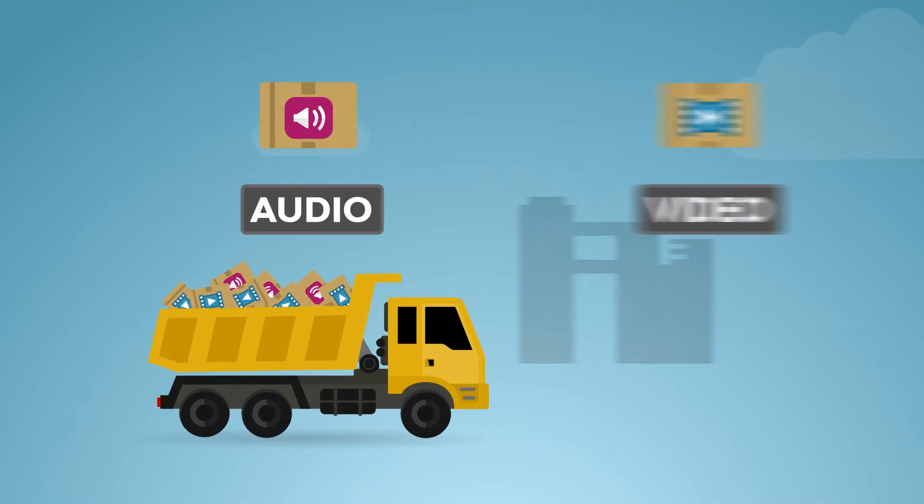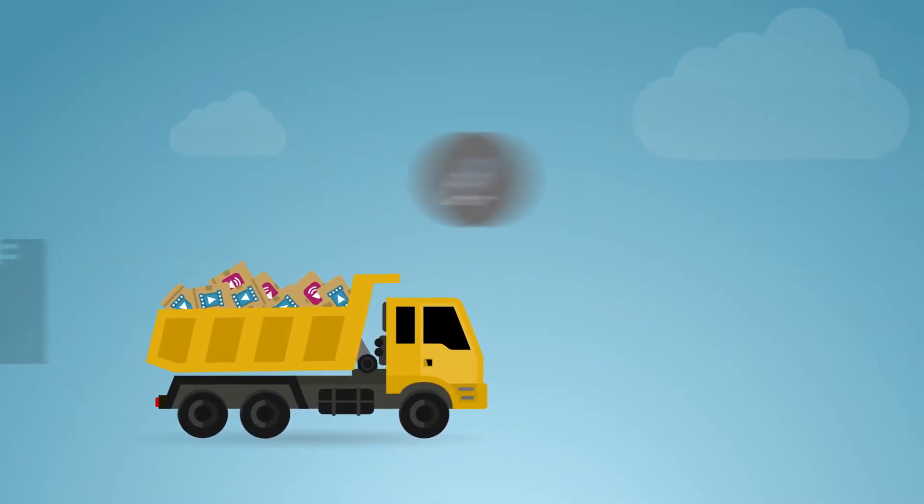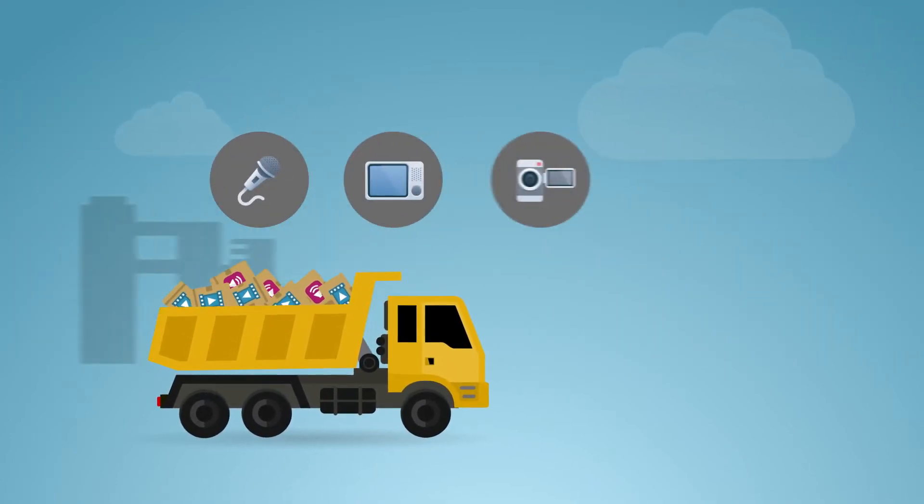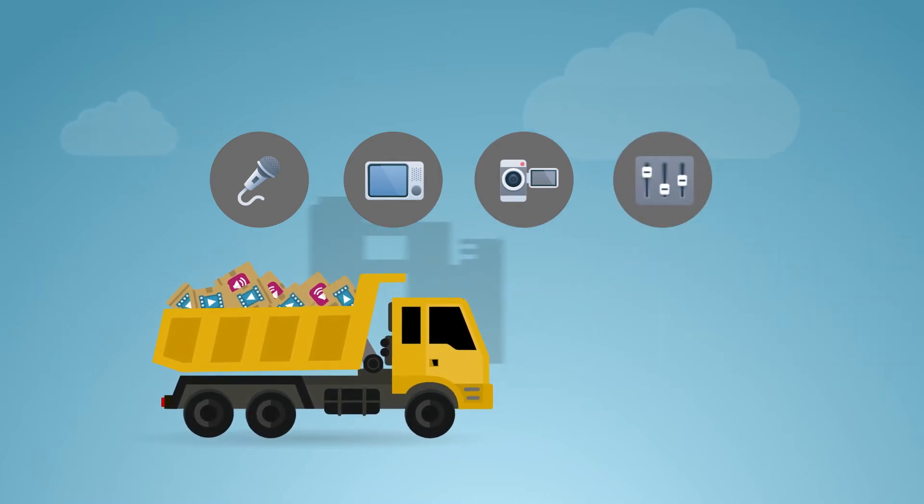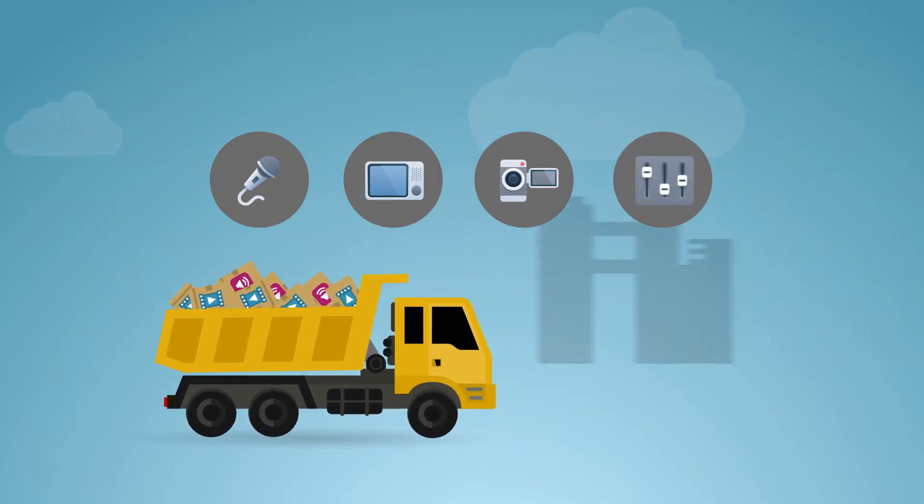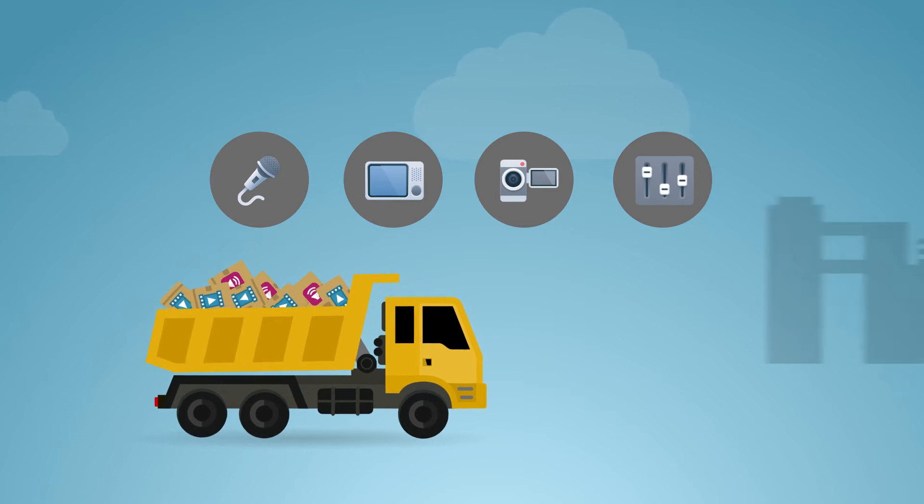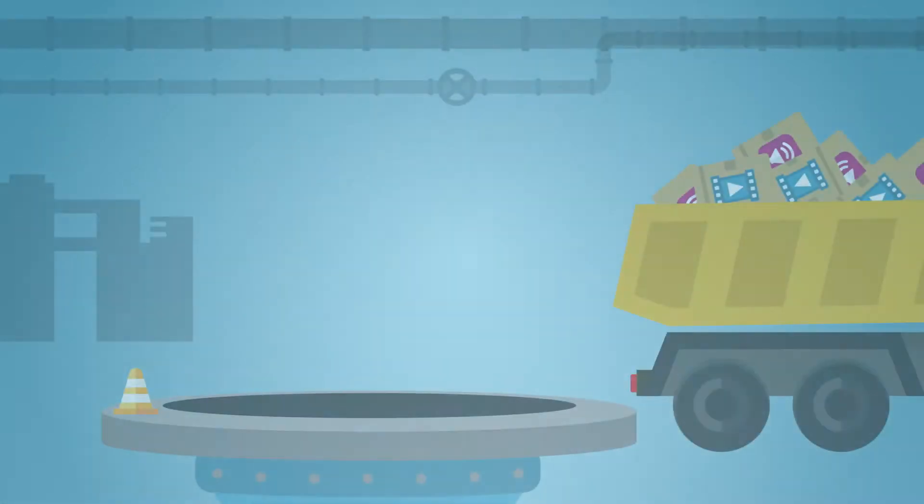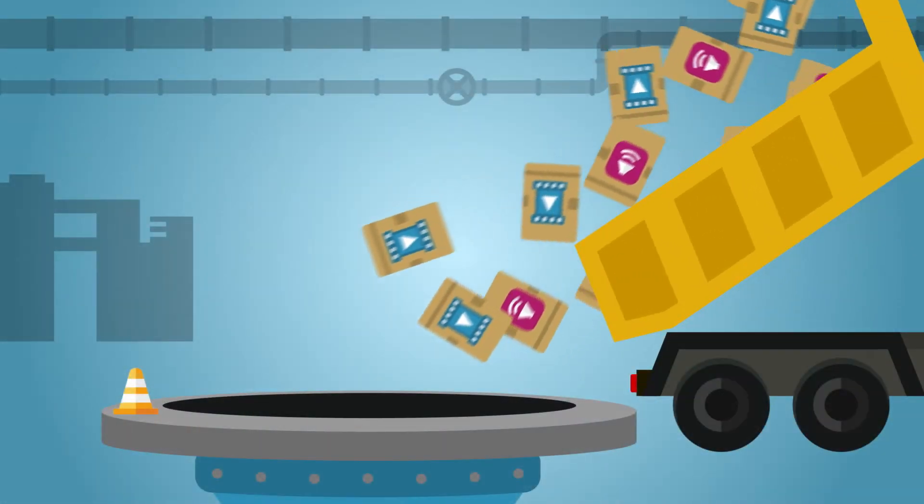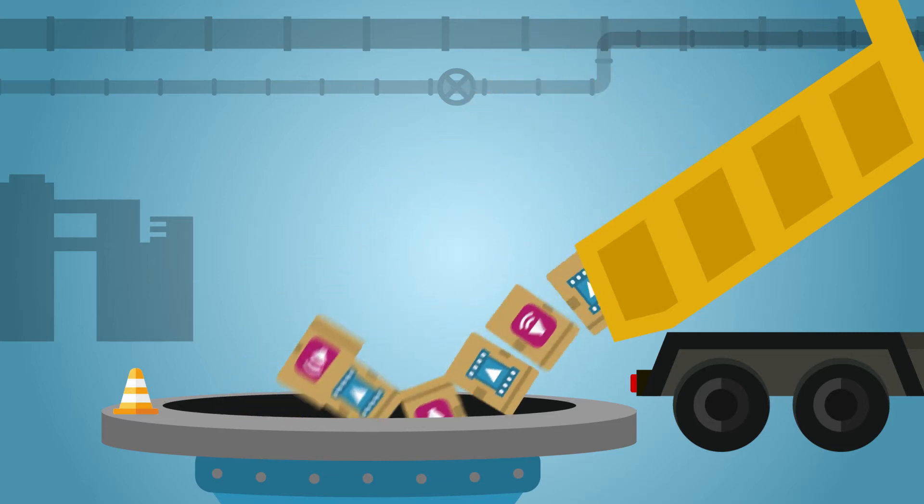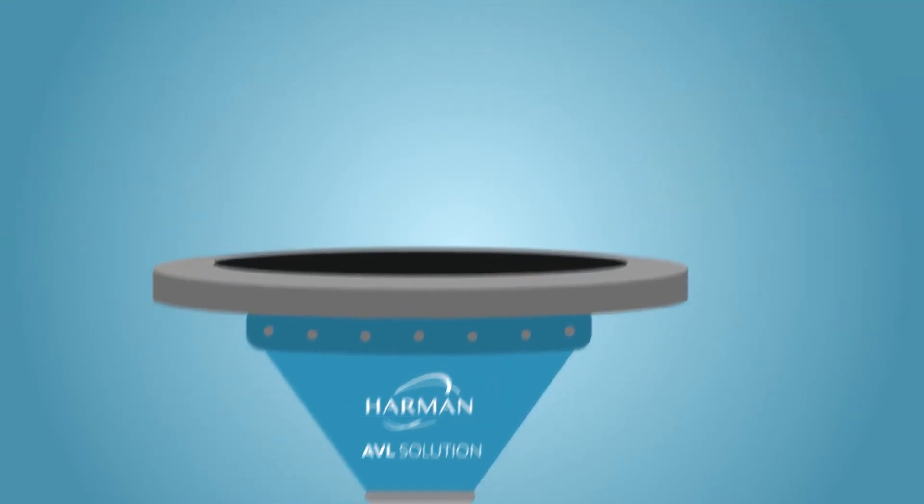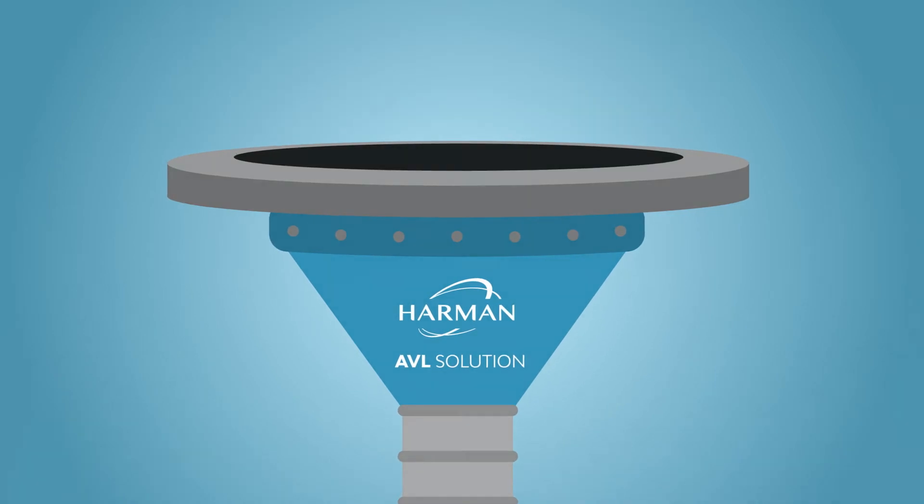We start with audio and video sources. Live audio is picked up by microphones, whereas audio and video from cameras, recordings, media servers, PCs, etc. come into the system in a variety of different ways, depending on the application. Some of these devices only output audio, some only output video, and some output both. But all of it ends up in the Harman complete system solution.